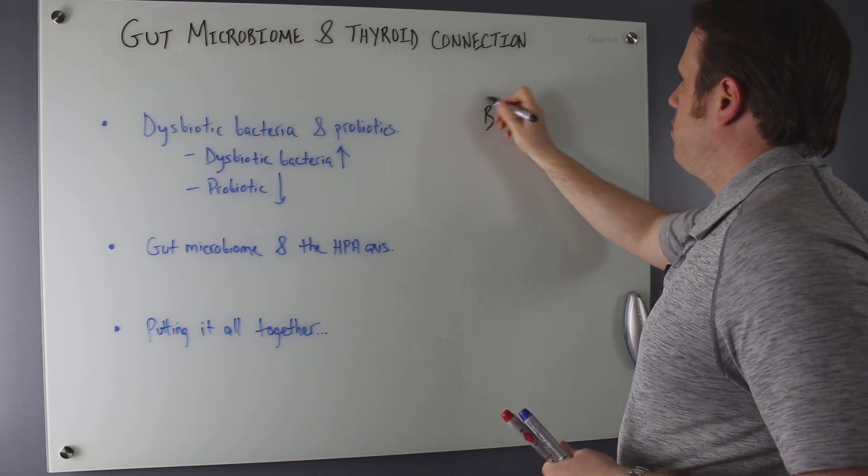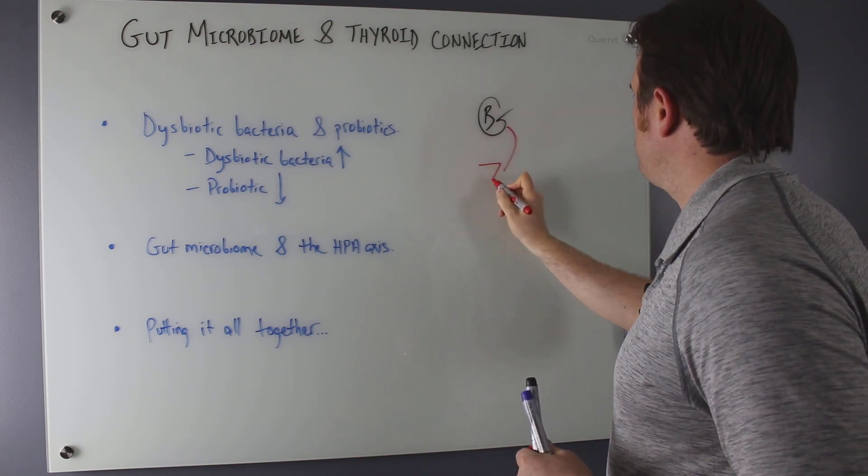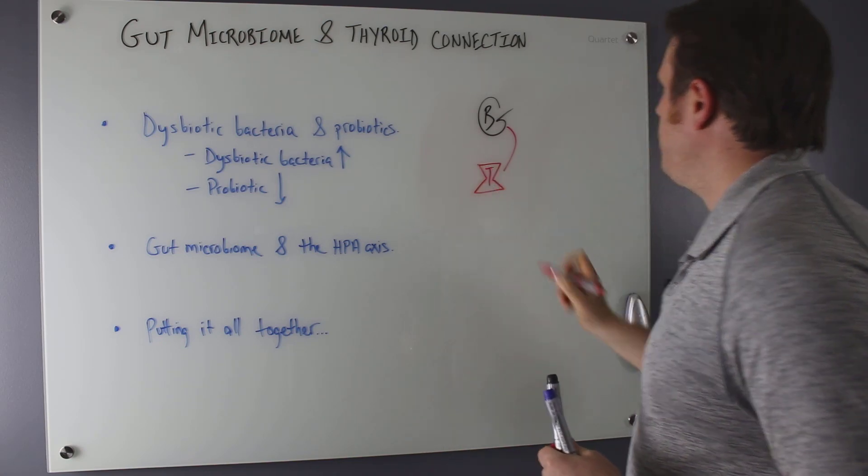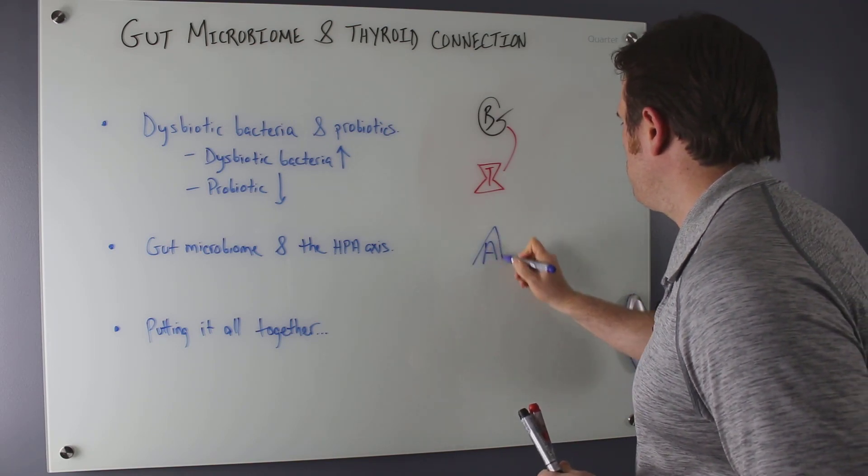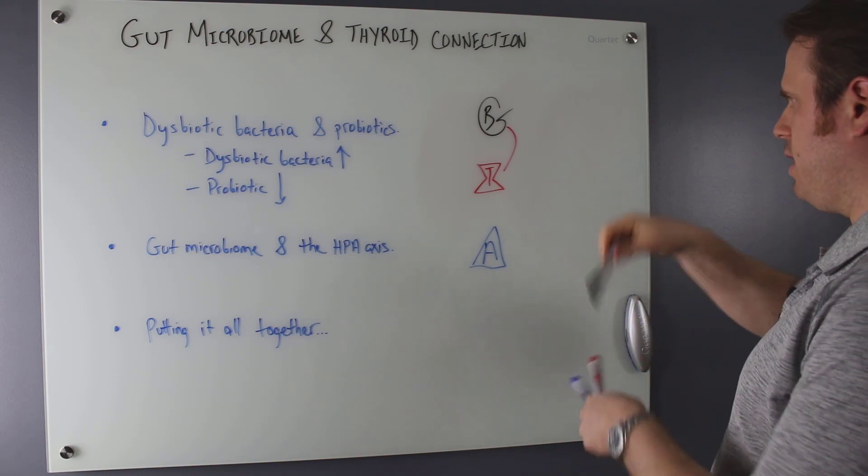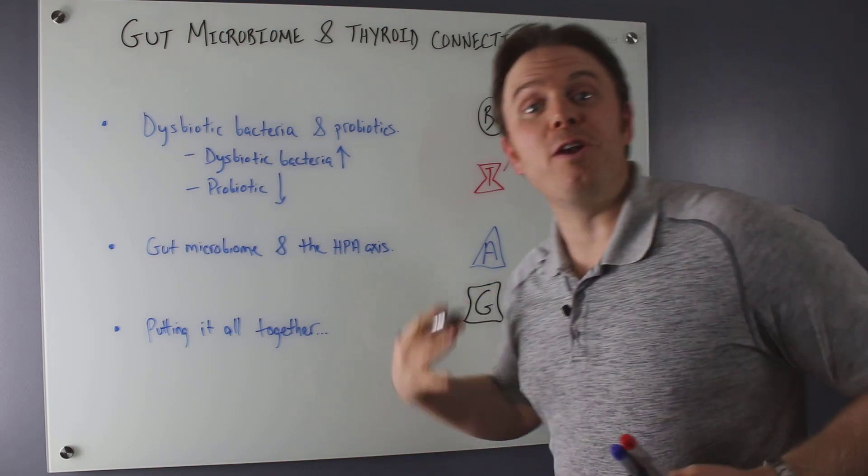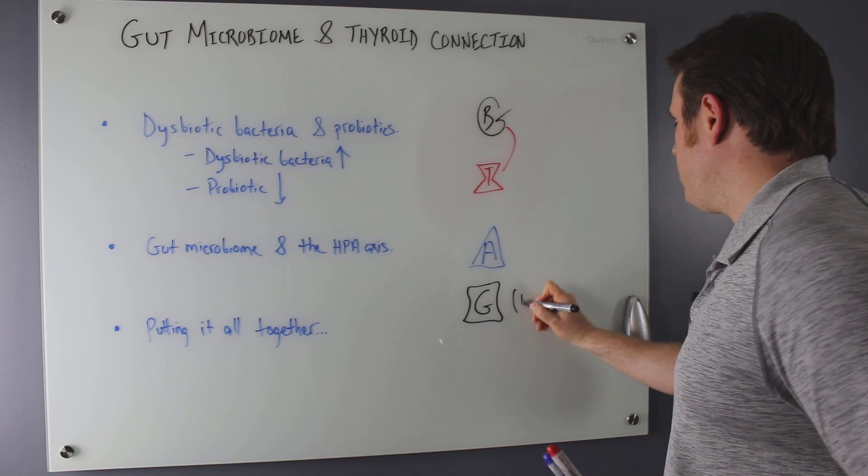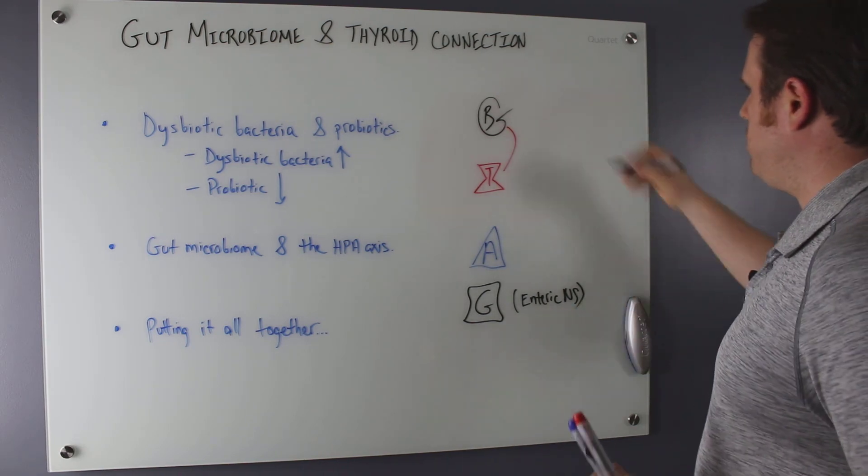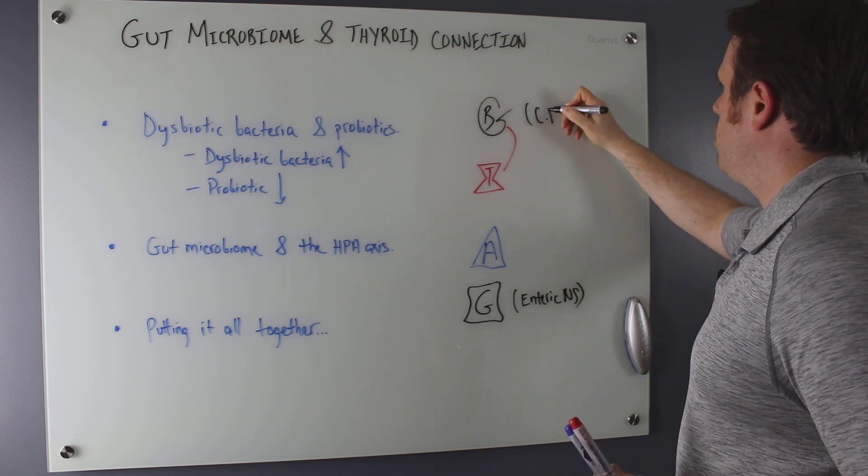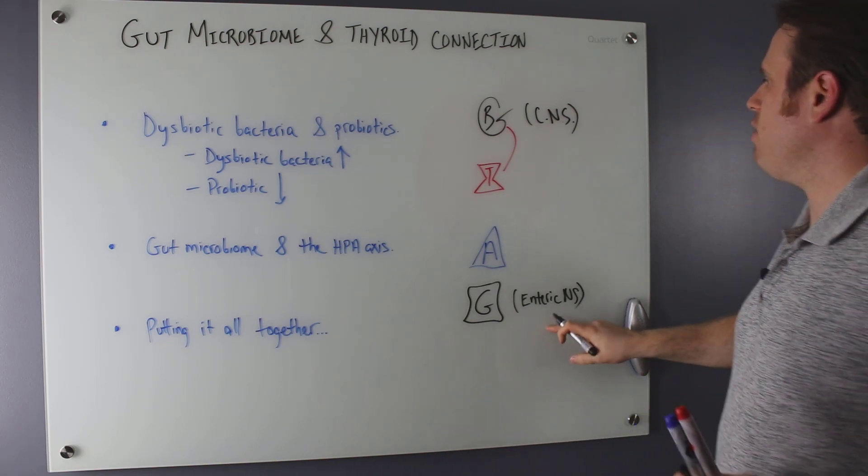So here's our brain right here. And then we have the feedback loop from the brain going to the thyroid. This is our thyroid. And then we have it going from here down to the adrenals. And then we also have the gut here as well. And the gut's interesting because the gut is its own nervous system unto itself. This is the enteric nervous system. And then with the brain right here, this starts off the central nervous system. And then we also have the peripheral nervous system, which goes to the extremities, but here's our enteric nervous system.